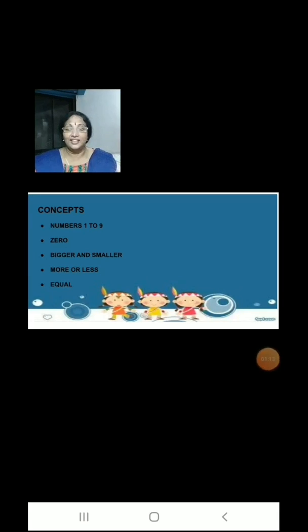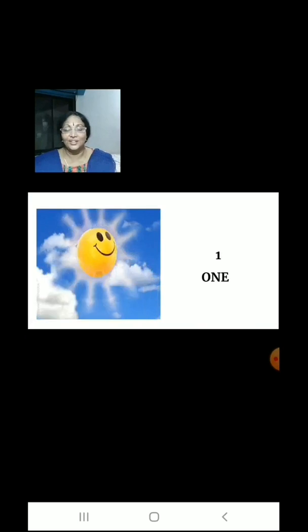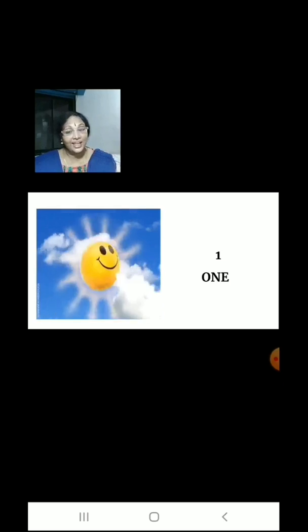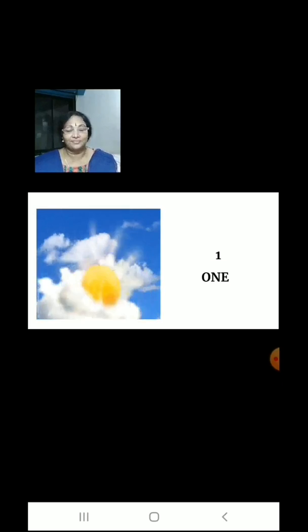Now children, let us learn how to count numbers 1 to 9. What is shining bright in the sky? 1 sun. There is 1 sun.